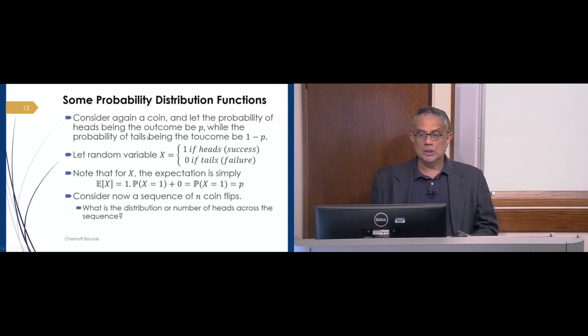So, the expectation, just to remind ourselves what this is, is let us take the value 1 times probability X equal to 1 plus 0, because the second term, no matter what the probability, would evaluate to 0, which is simply the probability that X equal to 1, which is, let's call it p, and that's what we assume. So, you would get tails with probability 1 minus p.